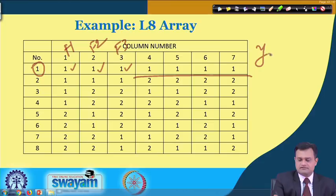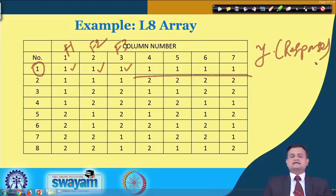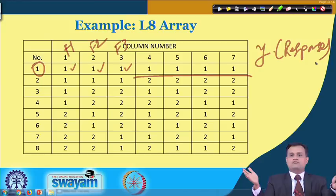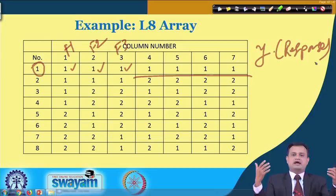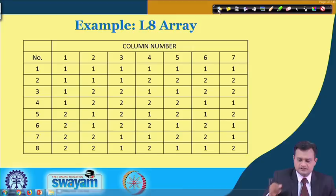Regarding difficulty in changing a factor: if a factor is difficult to change from low to high, you should assign it to the column where the number of changeovers is minimum. For example, in the first column the factor changes only once across 8 runs, but in column 2 it changes three times. So factors that are difficult to change should be assigned to columns with fewer changeovers — keep this important advice in mind.